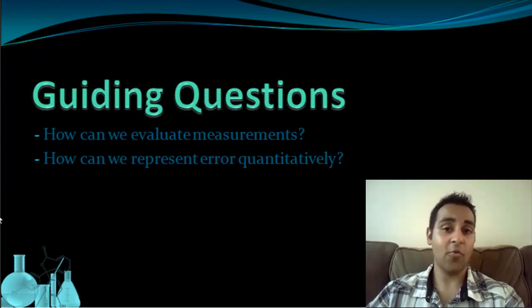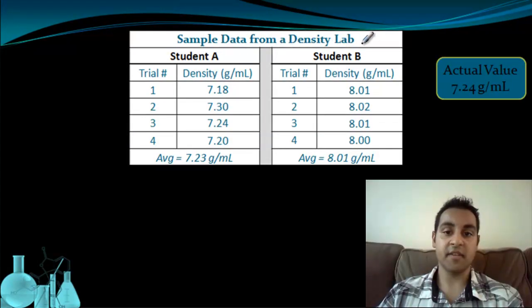To help us talk about how we can discuss and evaluate data, let's look at some sample data from a density lab, similar to the density lab that you did in class, that gives four trials per student, and the density was calculated in each trial, then an average was taken. We have sample data from student A and student B. We also have the actual value of the substance that was being calculated, 7.24 grams per milliliter. Let's take a look at some ways to discuss this data.